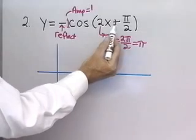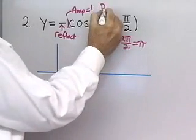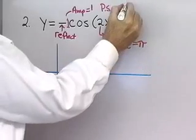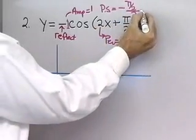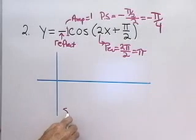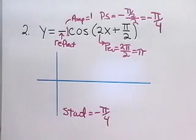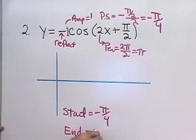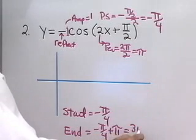The combination of the coefficient and the constant term will give me the phase shift. My phase shift is going to be the opposite of pi over 2 divided by 2 — that's negative pi over 4. So my graph is going to start at the phase shift of negative pi over 4. It will end pi units later, at negative pi over 4 plus pi, which is 3 pi over 4.